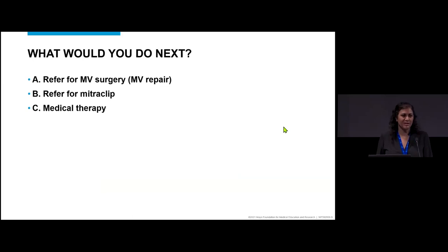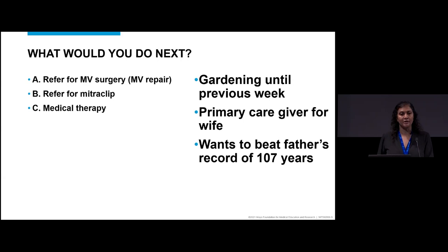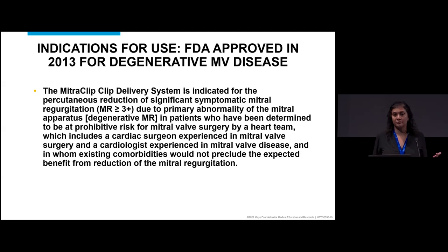He had a mean gradient of 3 at a heart rate of 88 and a valve area greater than 4. The question is: should they undergo surgery, medical therapy, or MitraClip? This guy was 94, but until the week prior he was gardening, very active, primary caregiver for his wife, and wanted to beat his dad's record of living to 107. His STS score for repair was 18% — a very high-risk patient — making him a candidate to consider for mitral regurgitation intervention.